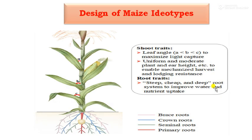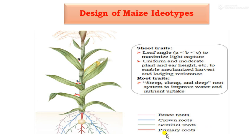Next is the design of maize ideotype. In maize, important shoot traits include leaf angle to maximize light capture — with sections A, B, and C of the leaf angle — which should be erect or parallel to solar radiation to enhance photosynthesis. A second trait is uniform and moderate plant height, ear height, and tassel height to enable mechanized harvest and lodging resistance. Root traits include brace roots, ground roots, seminal roots, and primary roots — all to be improved for better water and nutrient uptake.